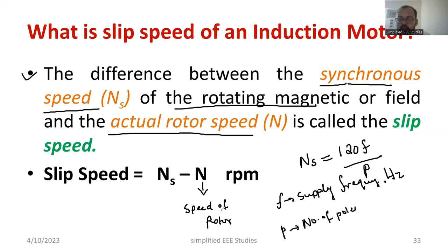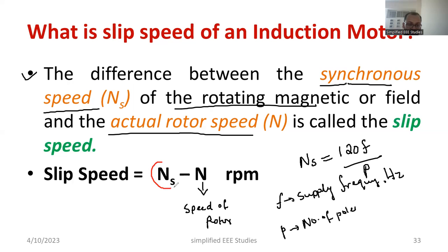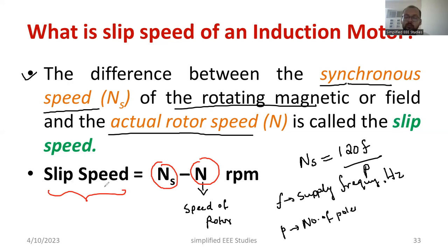Which is larger — synchronous speed or rotor speed? Synchronous speed is always larger than rotor speed. There is definitely a difference between synchronous speed NS and the actual rotor speed N. The difference between synchronous speed and the actual speed is known as slip speed. Please study this formula — it is very important for your exam.